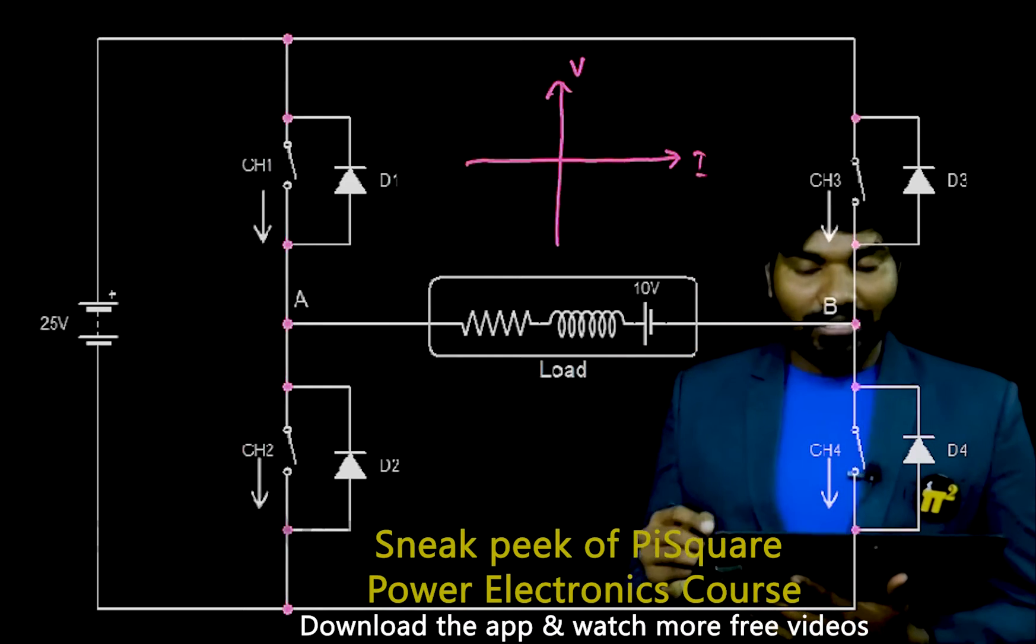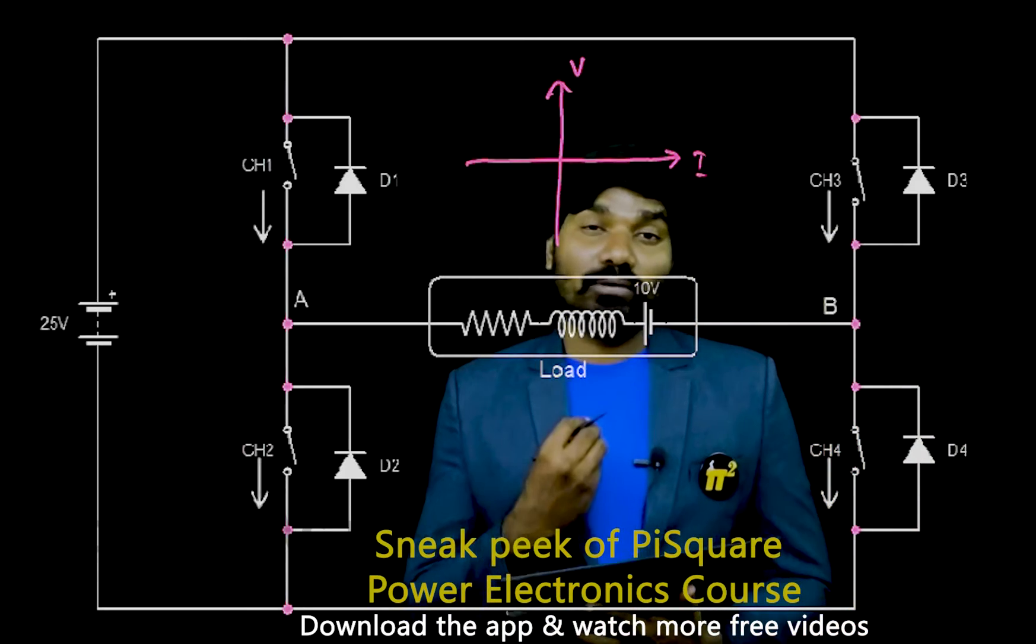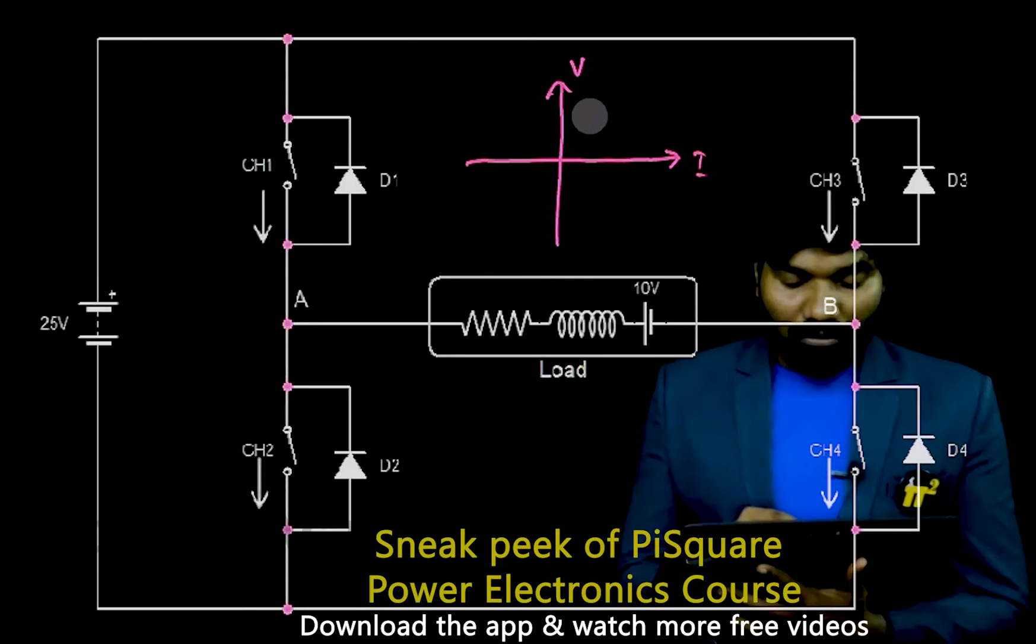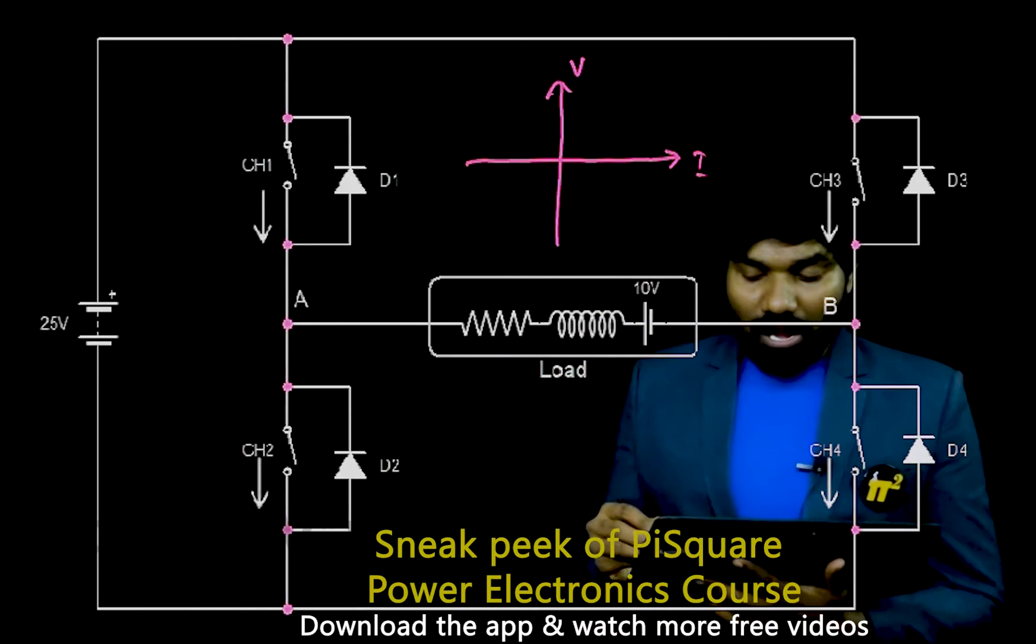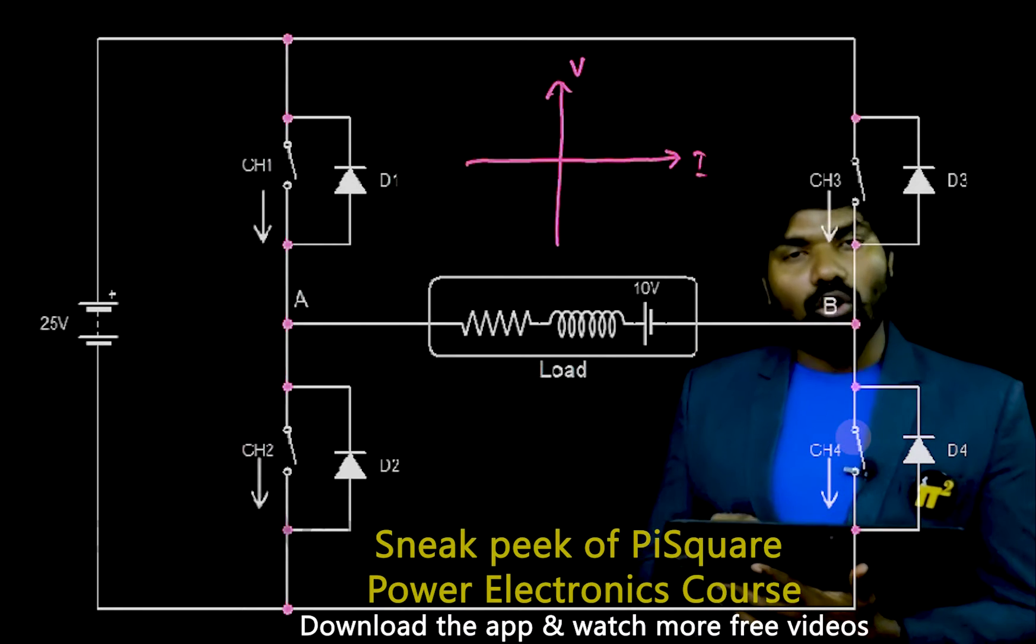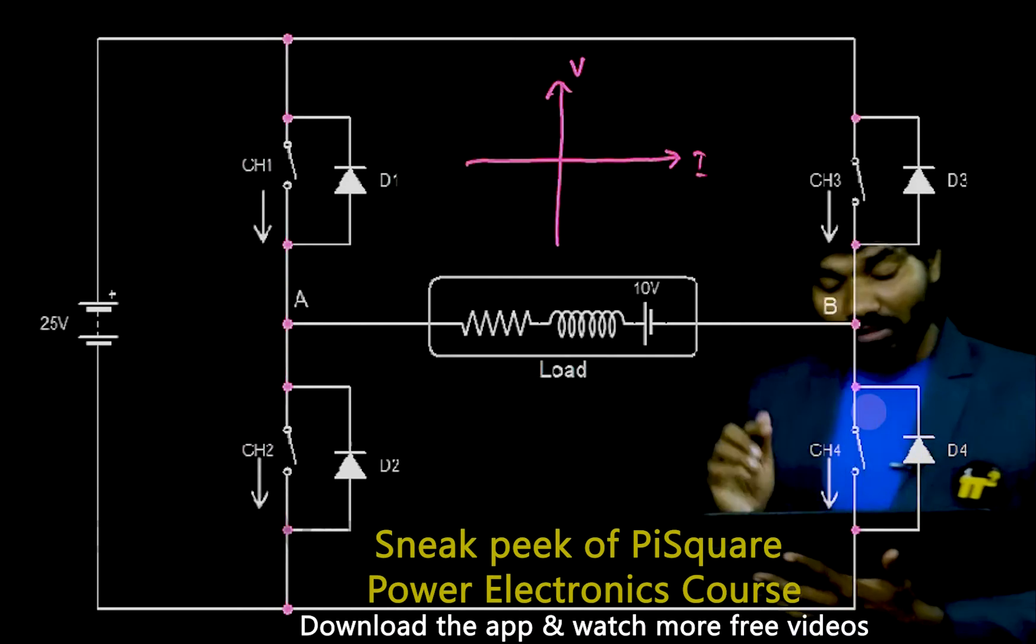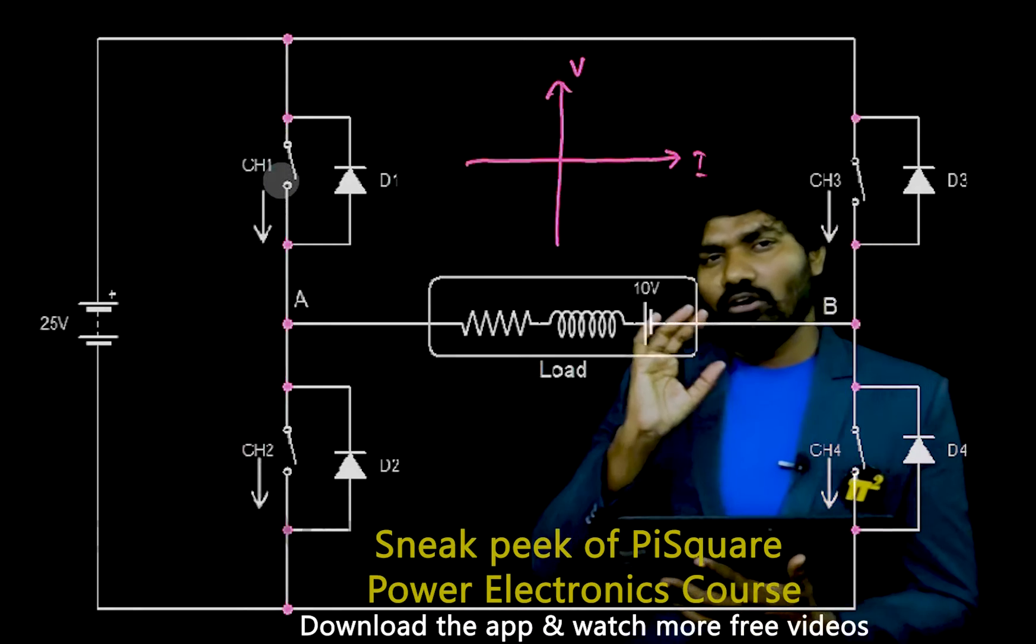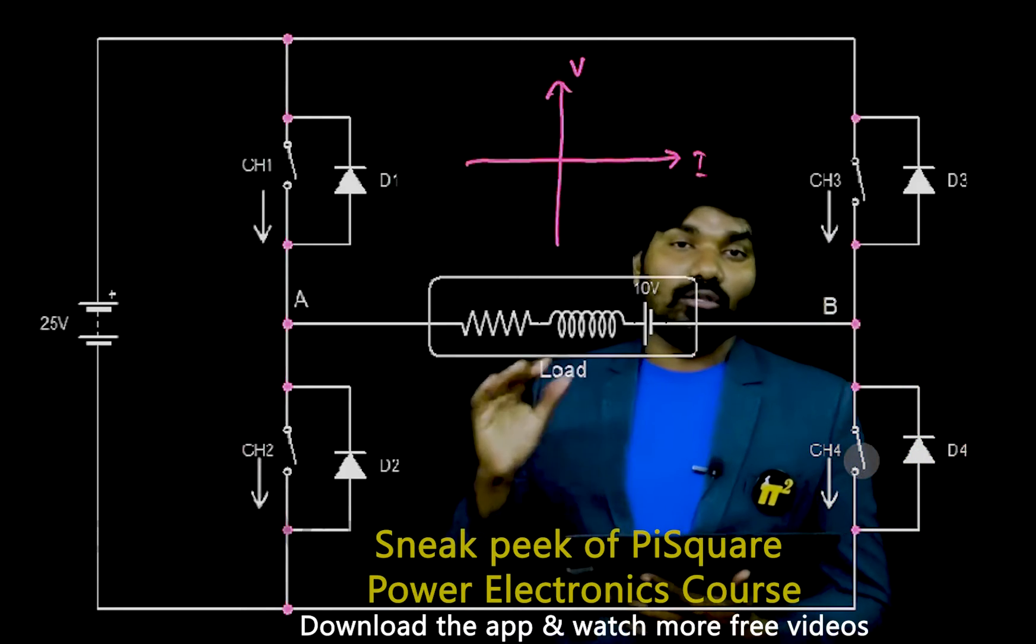Let's see its operation in all four quadrants. If I want to operate this converter in first quadrant, then what I have to do is I have to turn on this CH4 all the time. I will keep it on all the time and I will keep on and off with this CH1. I will operate CH1 by keeping CH4 on all the time.